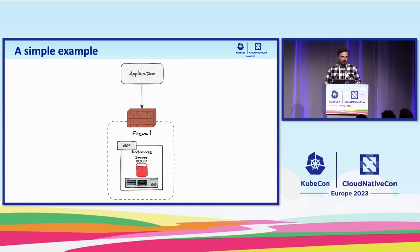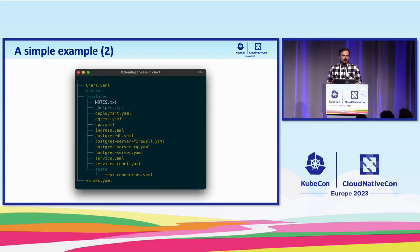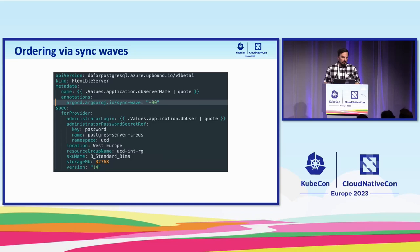Here's a simple example: a REST API that collects audit events and exposes an API to query them, using Postgres in a cloud with a firewall restricting IPs. We extend the Helm chart with Crossplane resources — defining a resource group, a server, a database — using the Upbound provider for Azure to stand up a flexible Postgres server. To ensure Crossplane resources are synced before the application, we use SyncWave with Argo.